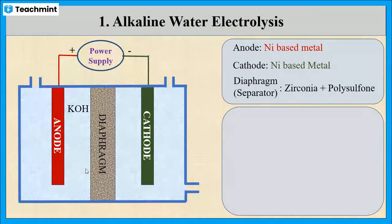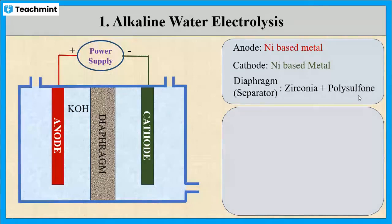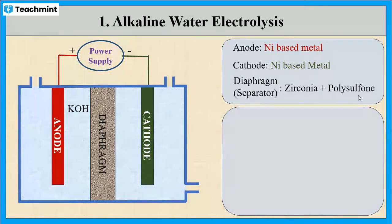Usually, this diaphragm is made up of a composite material of zirconia and polysulfur. This separator allows only OH⁻ ions but restricts the mixing of hydrogen and oxygen at the cathode and anode.